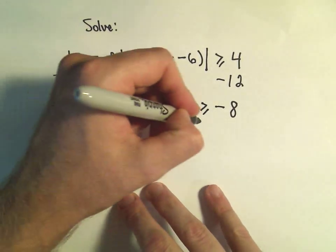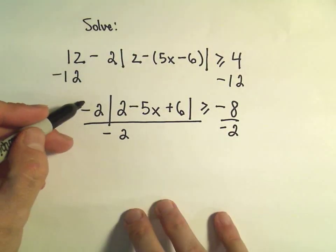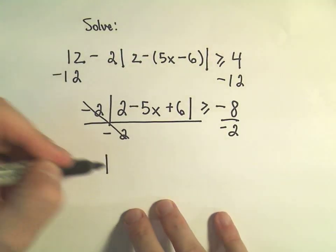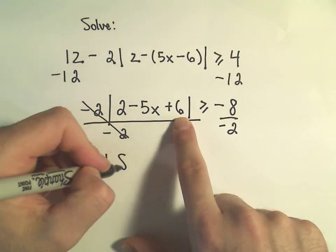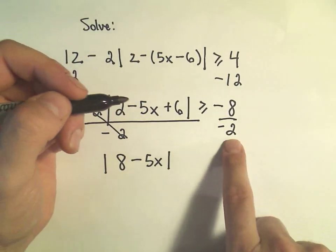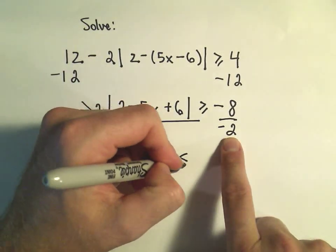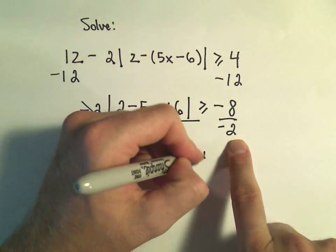The next thing I'm going to do is divide both sides by negative 2. So on the left, the negative 2s will cancel out. Inside the absolute value, again, I'll have a positive 2 and a positive 6, which is a positive 8, minus 5x. And again, since we divided by a negative number, our inequality flips. Negative 8 over negative 2 is positive 4.